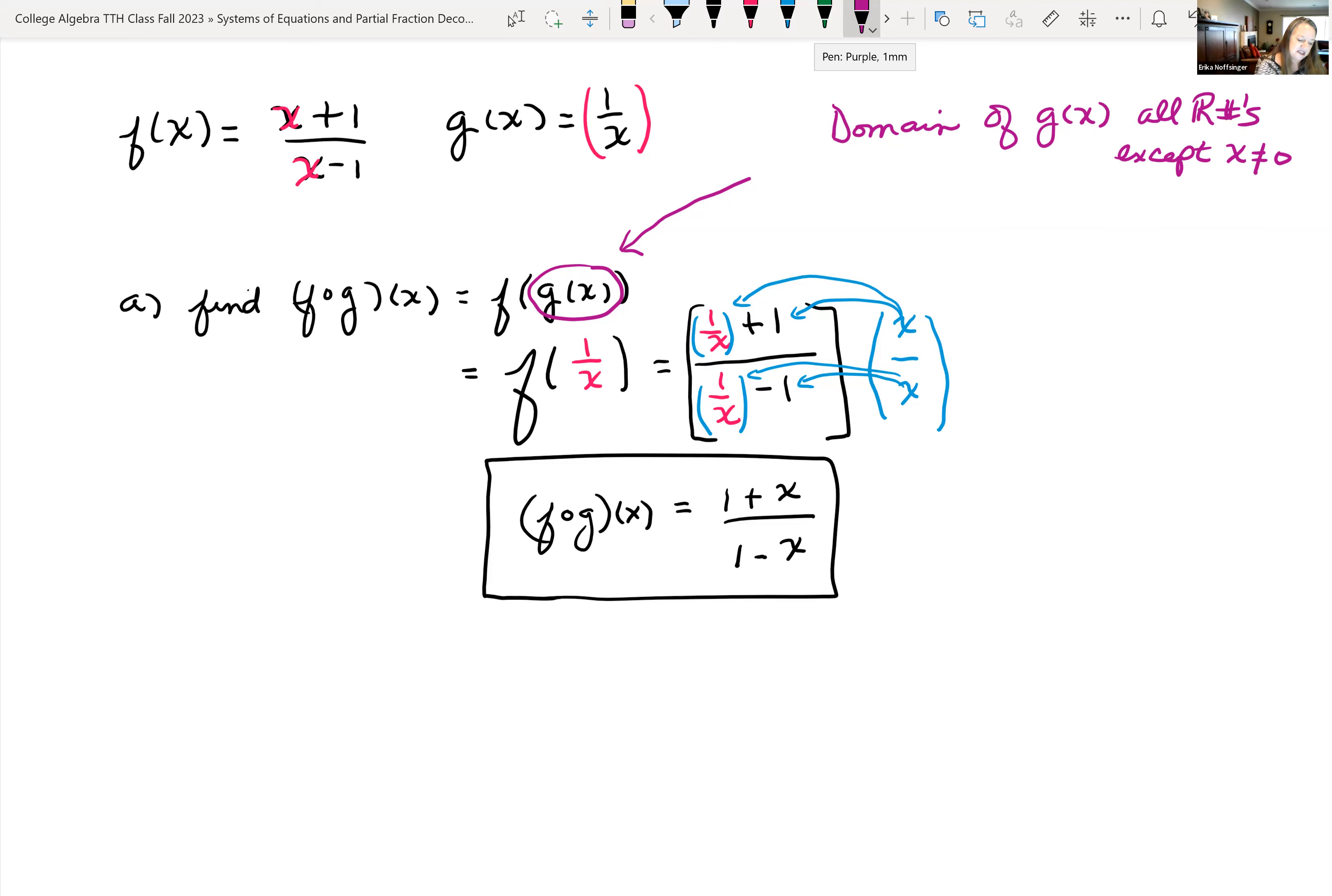The other thing that we have to do is we have to look at the domain of f of x, the outer function. So the domain of f of x, well again, I have a variable in my denominator. So I'm worried about values of x which would set that denominator equal 0. So I would figure out what that was. So x minus 1 is 0 and x is 1. So for my domain of f of x, x cannot be 1.